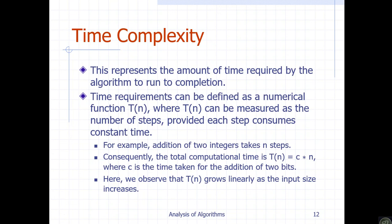Time complexity shows how much time an algorithm takes. The theoretical analysis of time complexity is measured by the function T(n). T(n) measures the number of steps or instructions executed by the algorithm in terms of the input size n. T(n) represents the time taken by the algorithm to process n number of inputs.